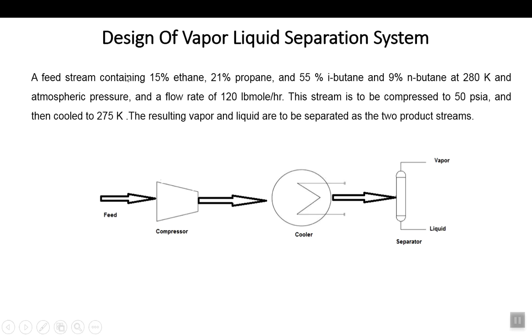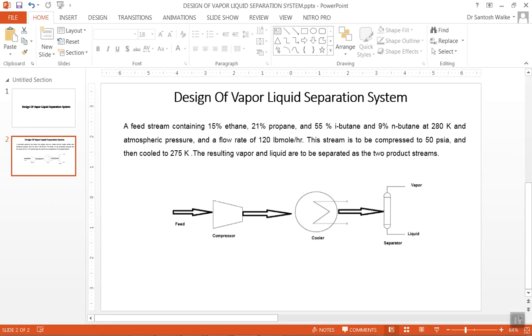Welcome to another new video on the design of a vapor-liquid separation system. In this case, we have a feed stream containing 15% ethane, 21% propane, 55% isobutane, and 9% n-butane. The temperature of this feed stream is 280 Kelvin, the pressure is atmospheric, and the flow rate is 120 pound-mole per hour. We compress it to 50 psi, cool it to 275 Kelvin, and then separate the resulting vapor and liquid in a separator. Let us start the simulation.